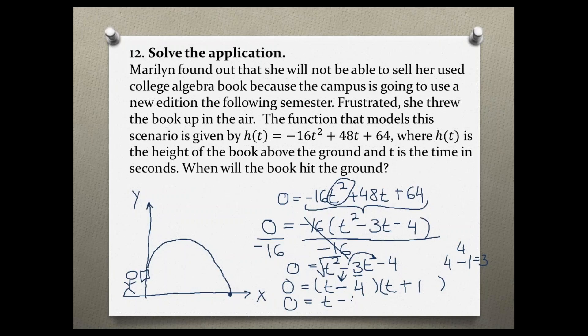So 0 equals t minus 4, and also 0 equals t plus 1. Solving for t, let's add 4 to both sides and we get t equals 4.